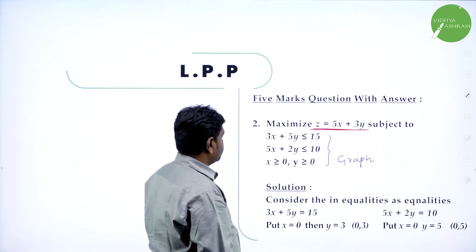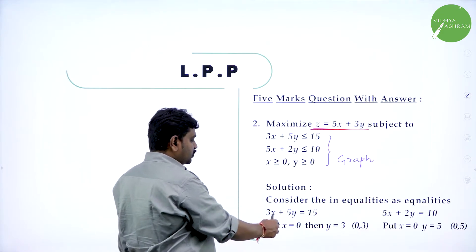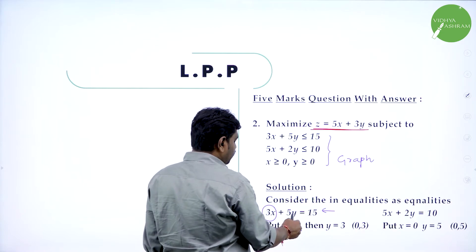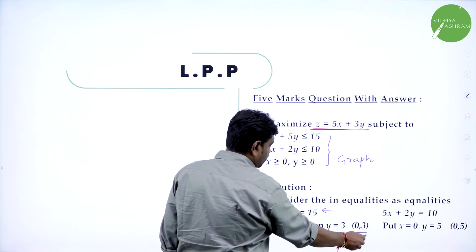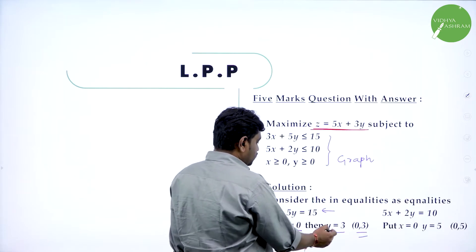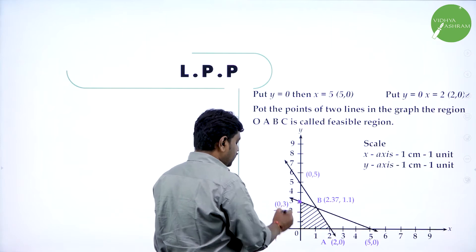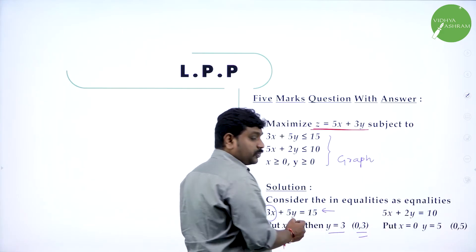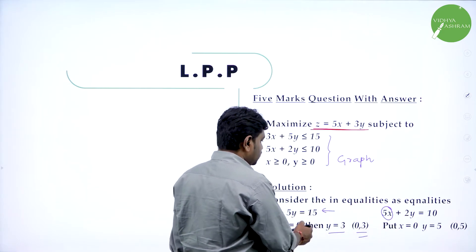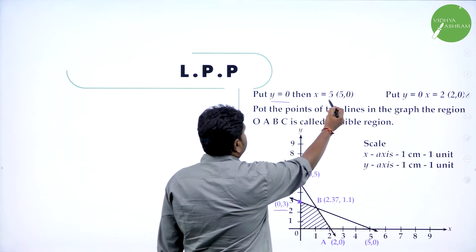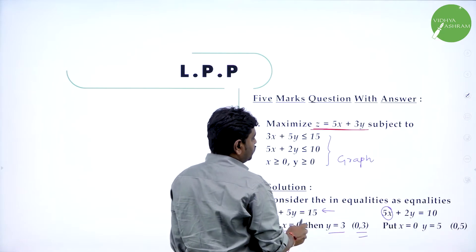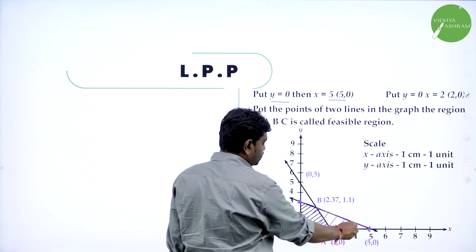Now I have to draw the graph for these constraints. First one is 3x + 5y ≤ 15. Take 3x + 5y = 15. Put x = 0: you get 5y = 15, so y = 3. One point is (0, 3) — a point on the y-axis. Then put y = 0: you get the point (5, 0) — a point on the x-axis. Stretch a line between those two points. Since the inequality is less than or equal to, shade below the line.